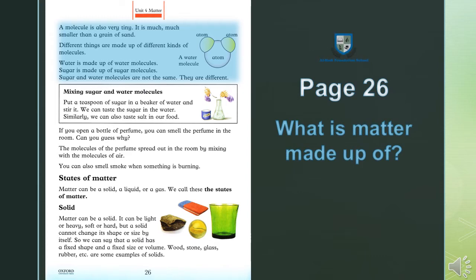Different things are made up of different kinds of molecules. Mukhtalif chizein mukhtalif molecules se banti hain. Jaise water is made up of water molecules — pani bana hai pani ke molecules se. Sugar is made up of sugar molecules — sugar yani chini, uske jo crystals hotay hain, woh sugar molecules se milkar bantay hain. Sugar molecules and water molecules are not the same — yeh ek jaise nahi hotay. They are different — yeh mukhtalif hotay hain.